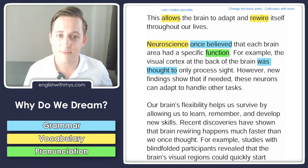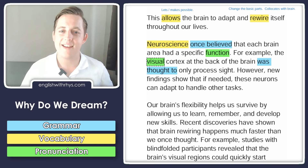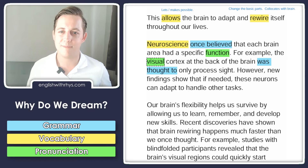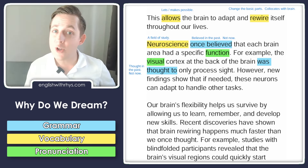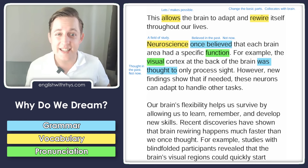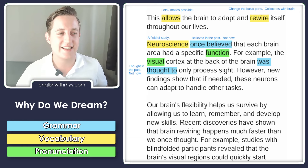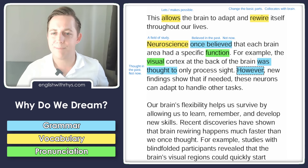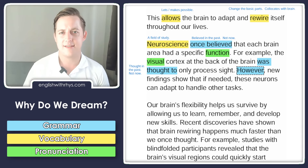I once believed — or it was thought — that cigarettes were healthy. Now we know that they are not. I have another word for pronunciation: visual. That's a fun sound. Visual. Visual cortex. Television. However, new findings show that if needed, these neurons can adapt to handle other tasks. 'However' is doing a big job here — it's telling us we're going to talk about the opposite side, maybe have an argument.